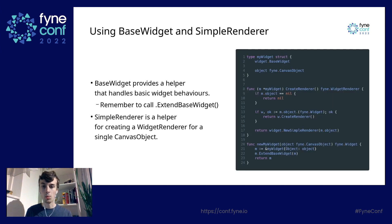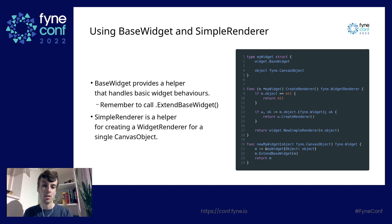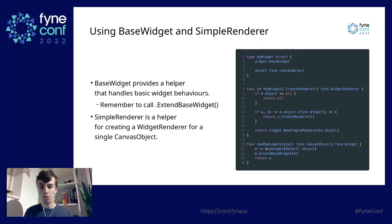How do we implement our own widget? One of the easiest ways is using a BaseWidget. It's a helper that handles basic widget behaviors. You need to remember to call ExtendBaseWidget, as seen on line 22. What you do is embed widget.BaseWidget in a struct, and then the Go compiler will make sure that your MyWidget struct implements everything that BaseWidget implements.